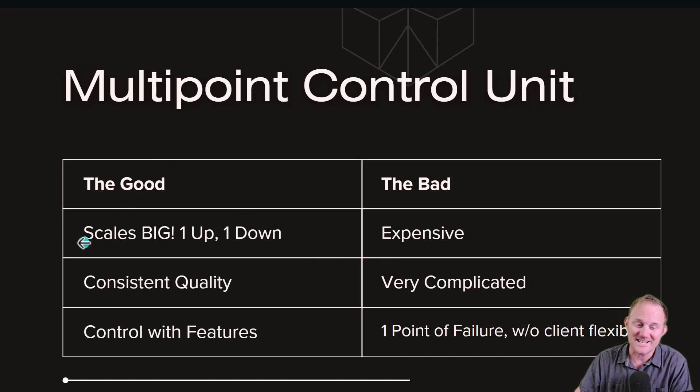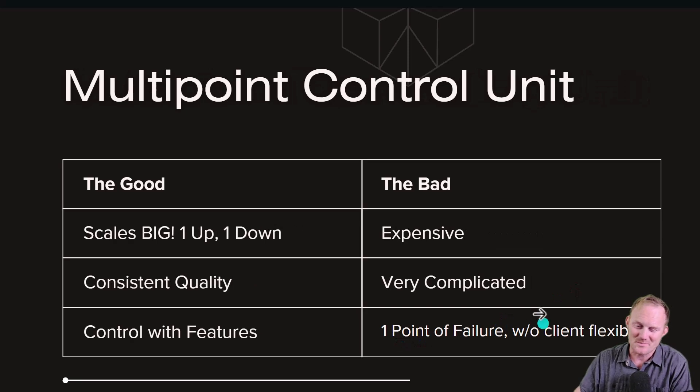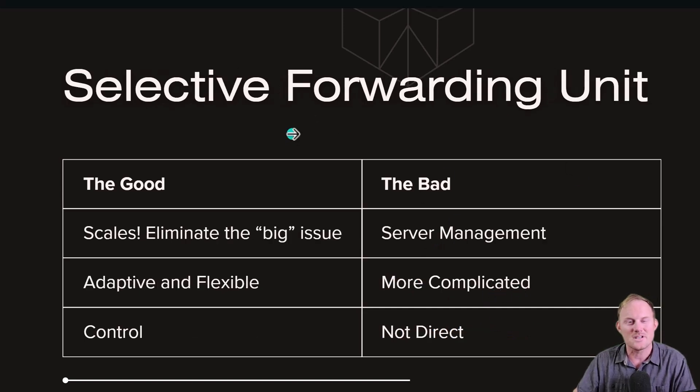The MCU, the good here is that it scales really big, one up and one down. It's never going to get better than that for the client. You get consistent quality because everybody will get the same stream and you have a lot of control with even more features than an SFU has. The bad, well, it's all of these. We have a server to manage. It's more complicated. It's not direct. It's also expensive. It's not just complicated. It's very complicated. And you have this new one point of failure, which if it goes down, no one will get anything. And there's not going to be hardly any client flexibility. They're going to get whatever the MCU sends out. So this is the best one. If money is no object and complicated is okay, but an SFU is typically what I will use.